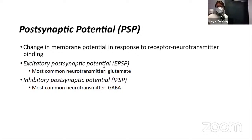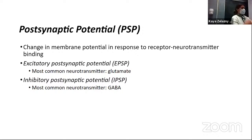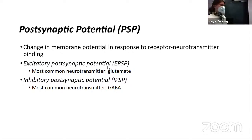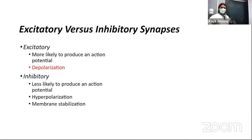For our excitatory post-synaptic potentials, the most common neurotransmitter is glutamate. When glutamate binds to its receptor, it lets sodium ions in — that's often the action of glutamate. Our most common inhibitory post-synaptic potential neurotransmitter is GABA, which might open a potassium channel or a chloride channel.